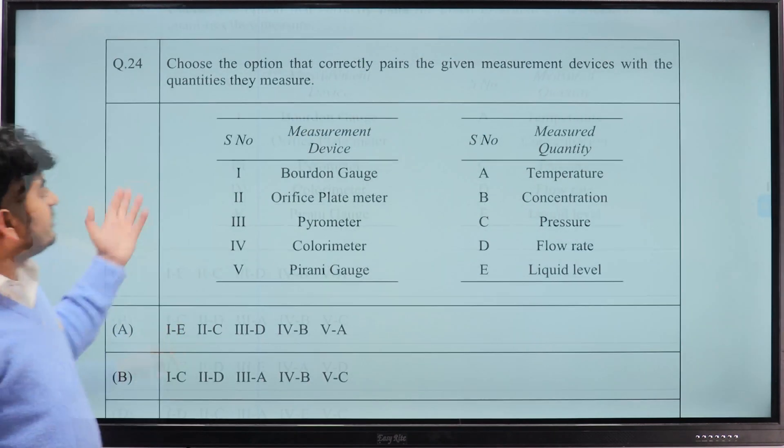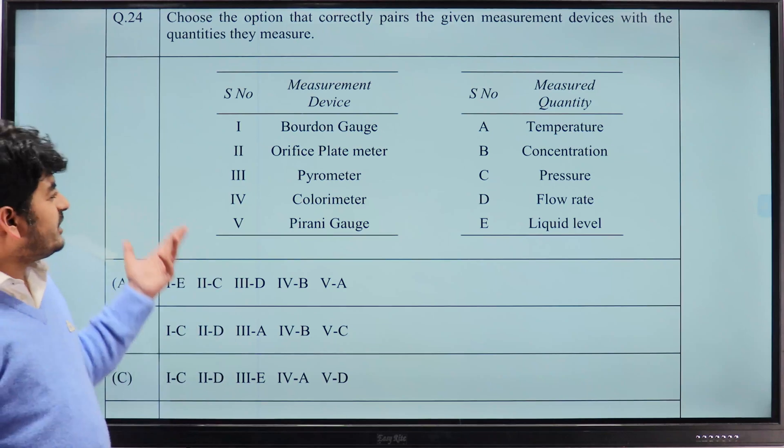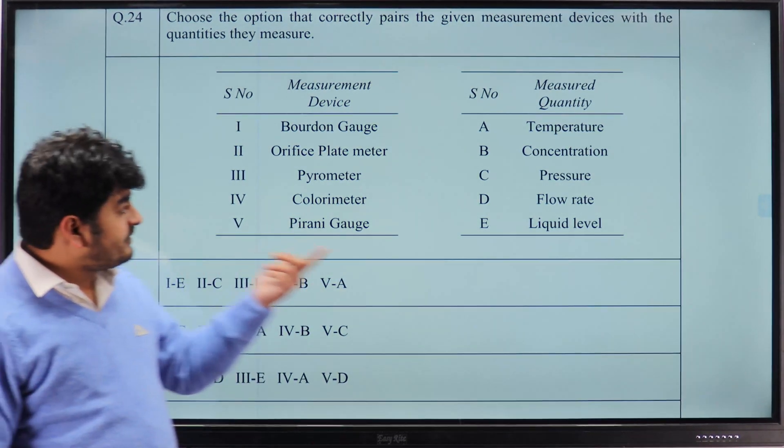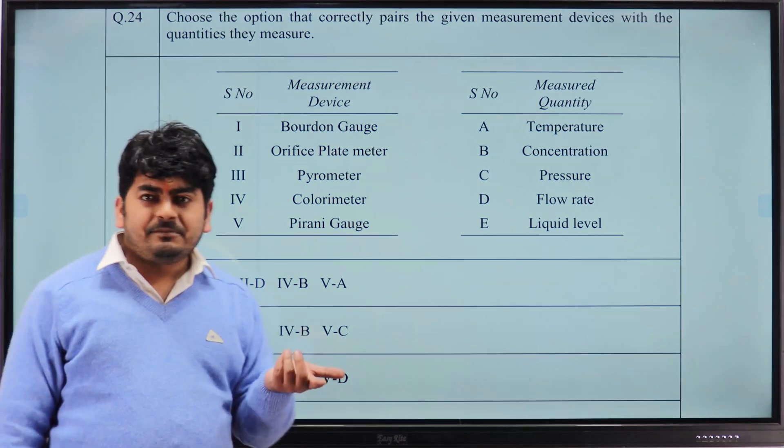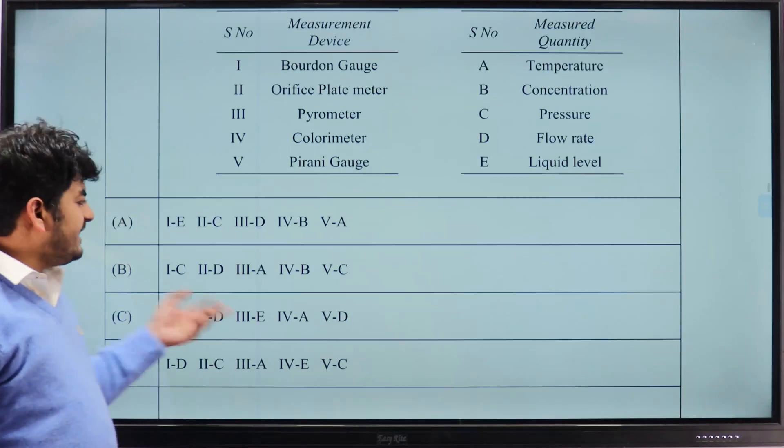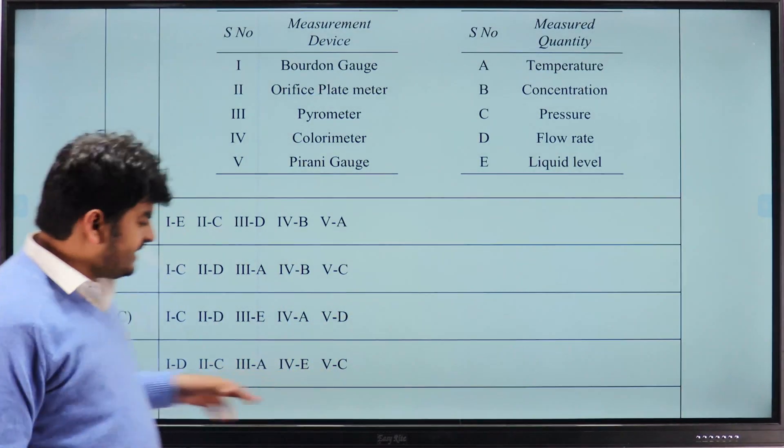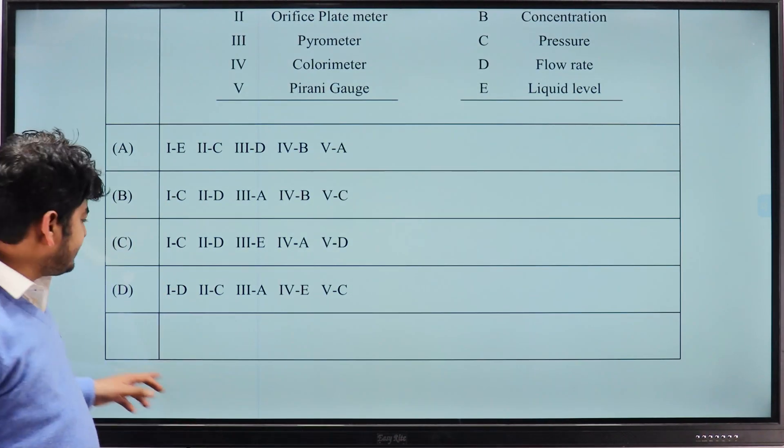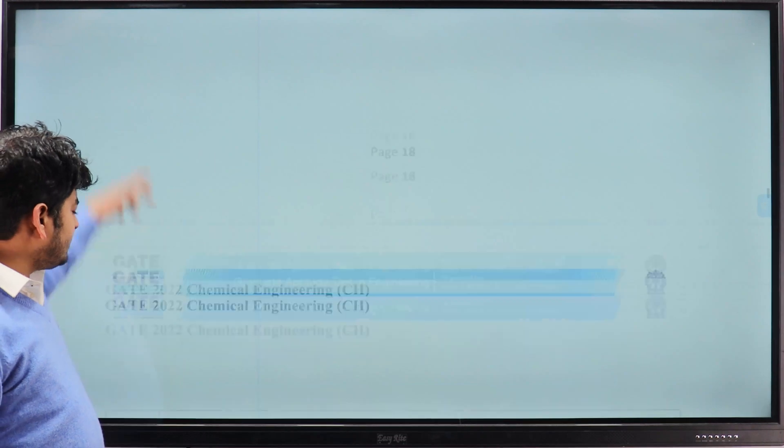Now question number 24 from instrumentation: Bourdon gauge for pressure, orifice meter for flow rate, pyrometer for temperature, so option B is the correct answer. You can check by yourself other things, these three are the common ones, so we can solve this type of question.